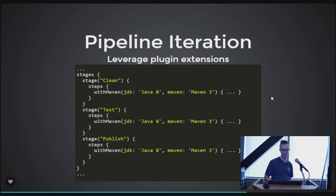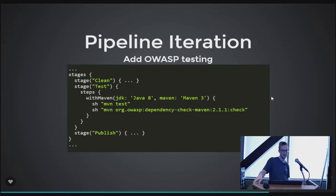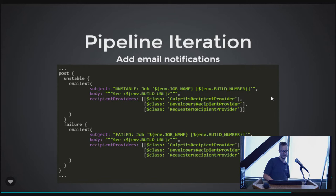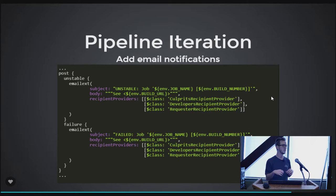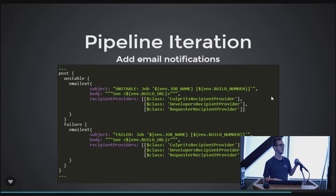We'll turn on OWASP testing — it's really just a Maven plugin — and add email notifications. At the top level alongside options and stages, we also have a post block that always runs regardless of job status. In there you can use conditions like unstable, failure, success, aborted, or changed. This is a prime example of duplicated text that would be great to move into a library — just call a standard emails function from your post block.